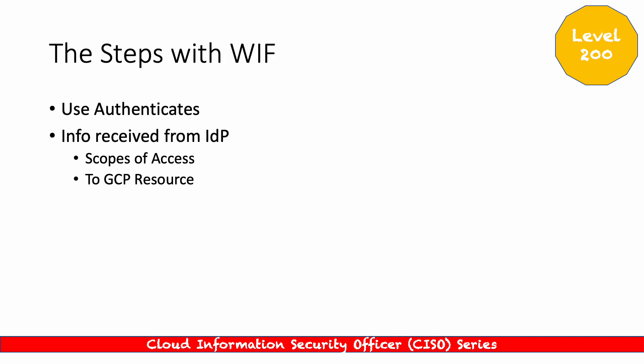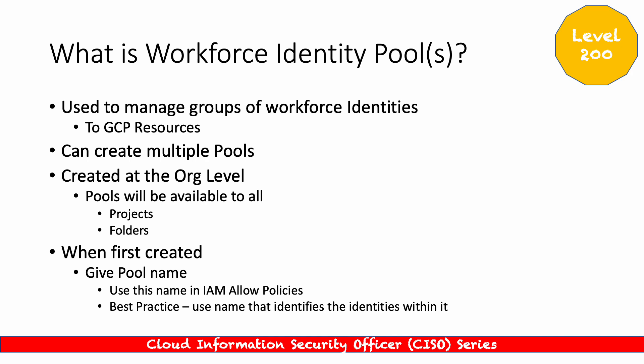There are a number of steps with Workforce Identity Federation. First, the user authenticates with the identity provider. The info received from the identity provider includes the scope of access — how much permission we're granting for that access and to what GCP resources. One of the main things with Workforce Identity Federation is this concept called Workforce Identity Pools. You can use a single pool or multiple pools, using different pools for different types of access — for example, employees versus contractors, or customers versus partners. This gives you that flexibility.